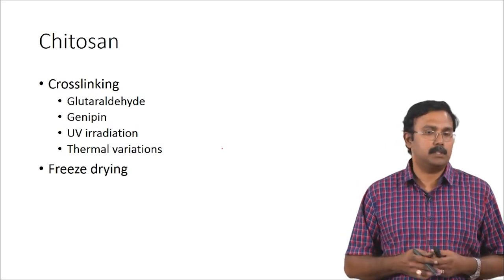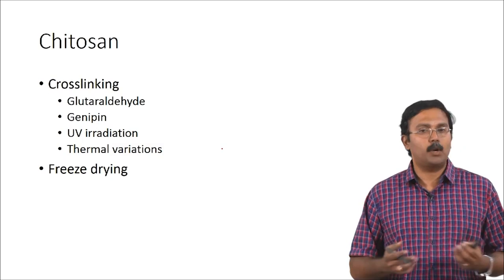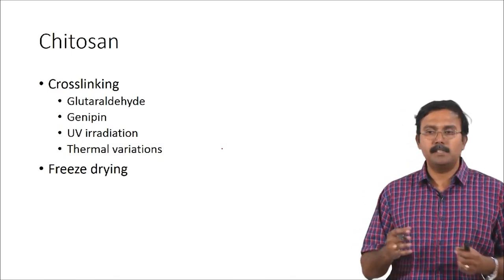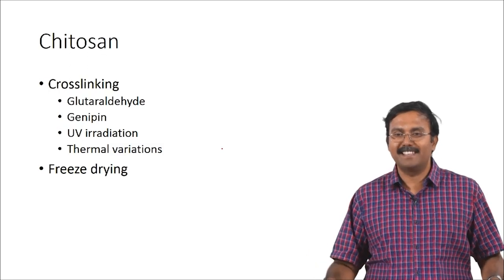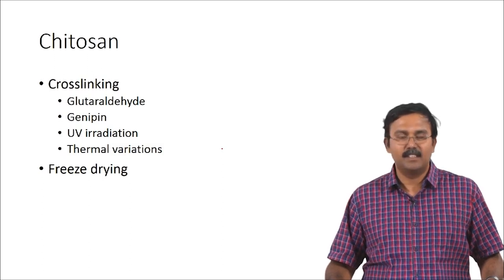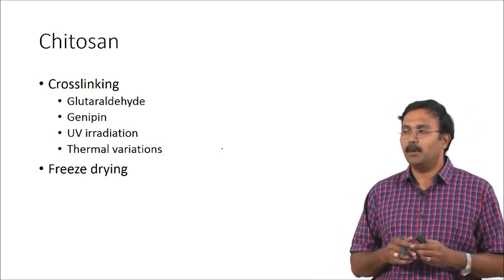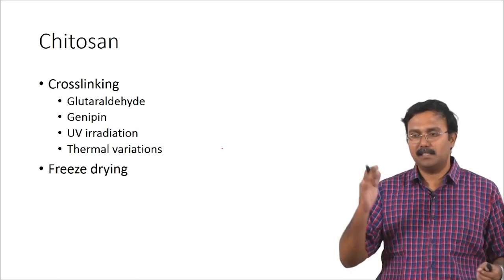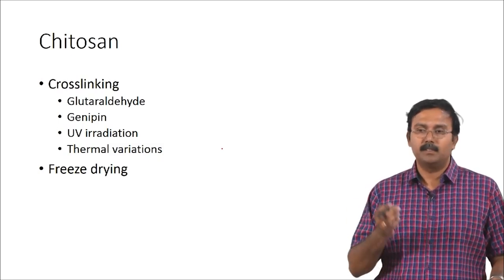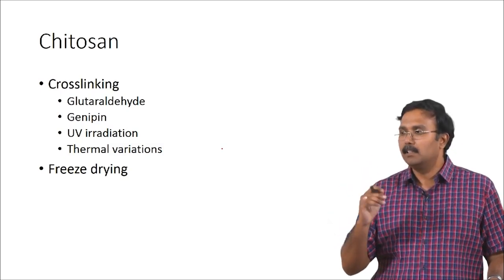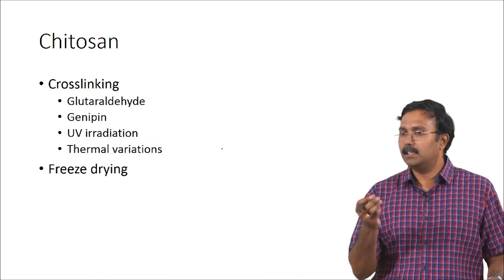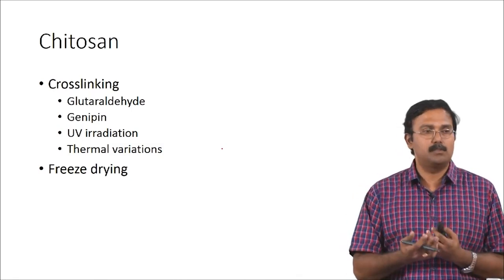Chitosan is primarily processed using freeze-drying technique to prepare scaffolds. What is freeze drying? Lyophilization — that is another name for freeze drying. What happens is you basically reduce the pressure enough so that water does not evaporate but just sublimes — ice sublimes to form water vapour. The advantage of doing something like this is you would be able to create pores. The ice which is there, if it immediately goes into vapour phase, the space occupied by the ice is going to be left empty, leaving pores. These porous structures are going to provide the porosity for the cells to attach and grow.